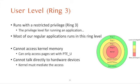User-level applications run in ring 3, which is the restricted privilege level. Applications cannot access kernel memory space — addresses without PTE_U set in their page table entry are inaccessible to ring 3 processes. Because only the operating system can set up all hardware access, which requires ring 0 privilege, applications cannot talk directly to hardware. To use hardware, they must send requests to the operating system via system calls, and the OS applies security checks whenever a system call happens.